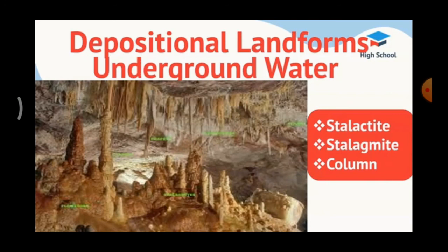Stalactites, stalagmites, and columns: when water containing dissolved calcite gradually drips from the ceiling of caves, water evaporates and the remaining calcite hangs from the ceiling — this is called a stalactite. When calcite deposits rise upward like a pillar from the floor, it is called a stalagmite. Sometimes stalactites and stalagmites meet together to form columns or pillars.